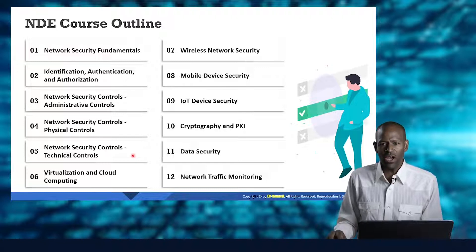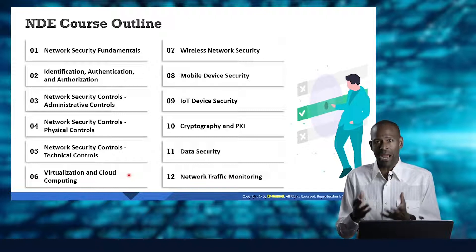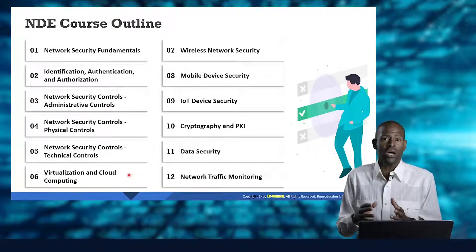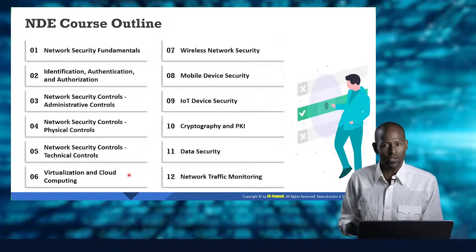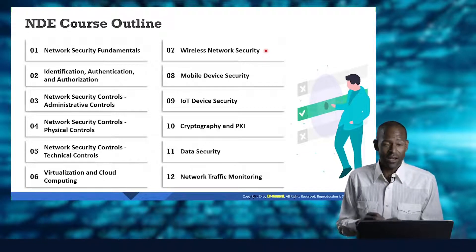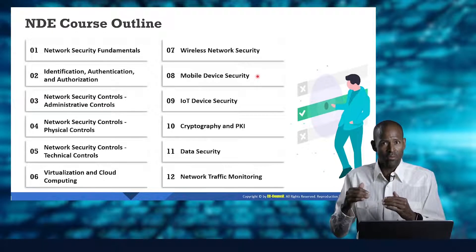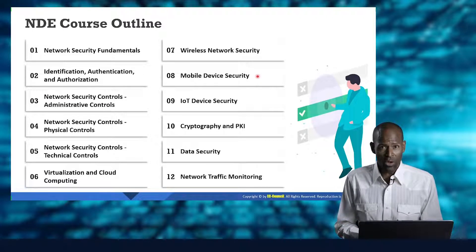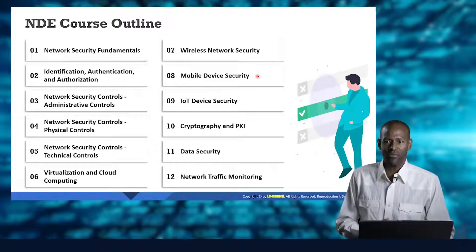Then we get into a very cool and growing area: virtualization and cloud computing. That includes everything from hypervisors like Hyper-V and VMware all the way to Docker and containerized applications and workloads — we'll cover all that terminology in module six. Module seven takes us to wireless security. It's very probable you're taking this class on a device using wireless. Wireless is ubiquitous — it's everywhere. There's also a secondary probability you're participating in this class on a mobile device.